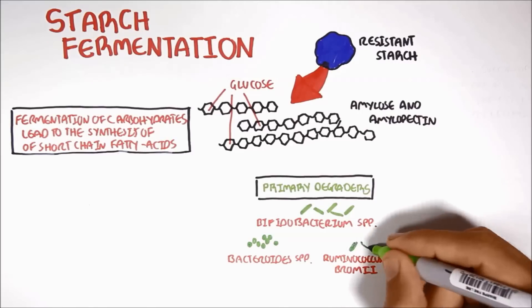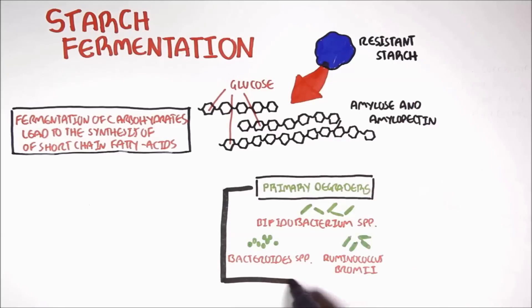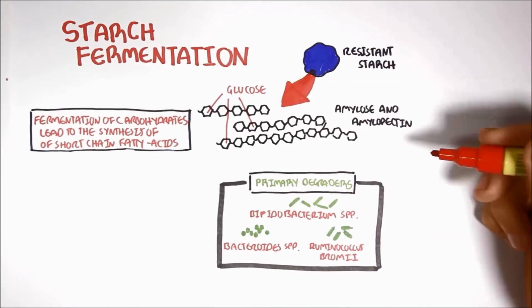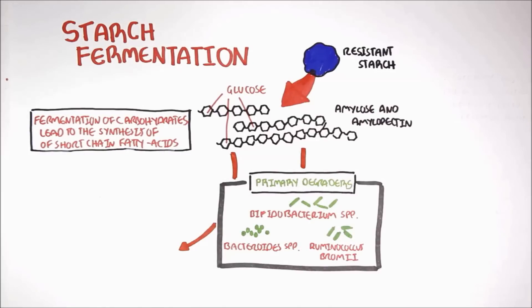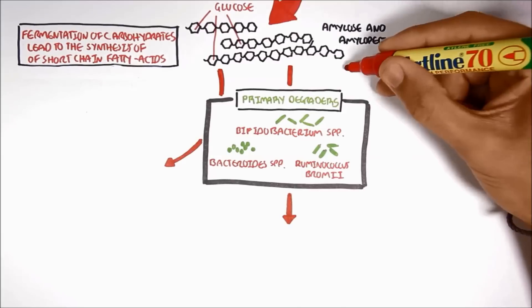The primary degraders have enzymes that are important in breaking down resistant starch and fermenting it. Many products are produced through the fermentation of resistant starch by the primary degraders.